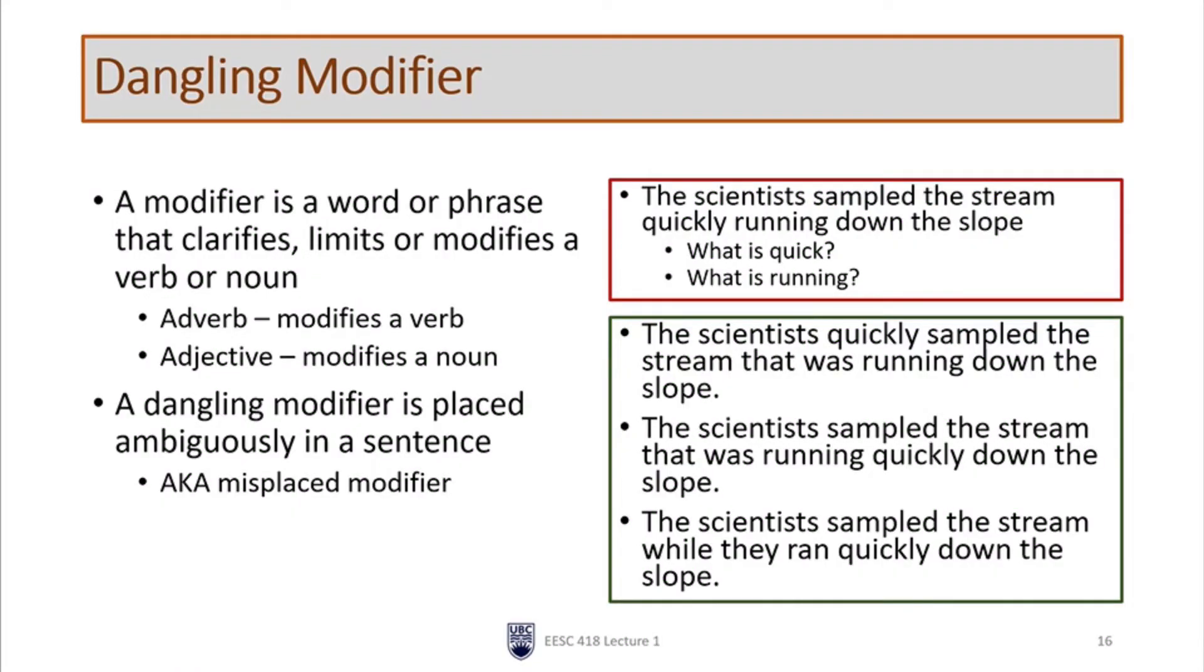You can see that each sentence means something slightly different. The first sentence says the scientist quickly sampled the stream that was running down the slope. In this case, the stream is running and the scientists were quick. In the second sentence, the scientist sampled the stream that was running quickly down the slope.